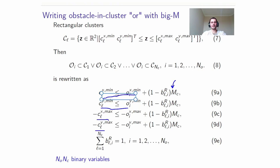However, if cluster L contains obstacle i, then the associated binary variable is equal to 1, and the constraints are imposed. If the obstacle is not contained in cluster L, then the binary variable is 0, and the constraints are relaxed. Since each obstacle must be contained in one cluster, the sum of the binary variables associated with the obstacle i over all clusters must be equal to 1. Please notice that this requires then NC times NO binary variables.